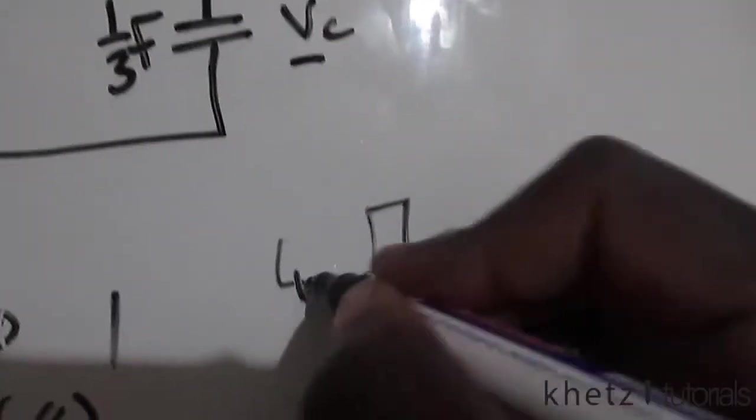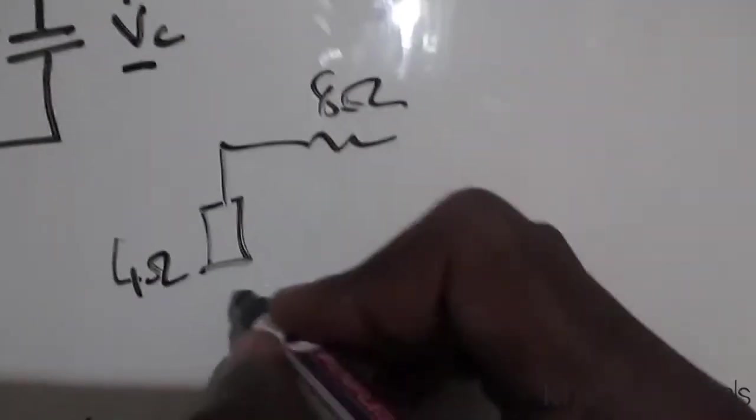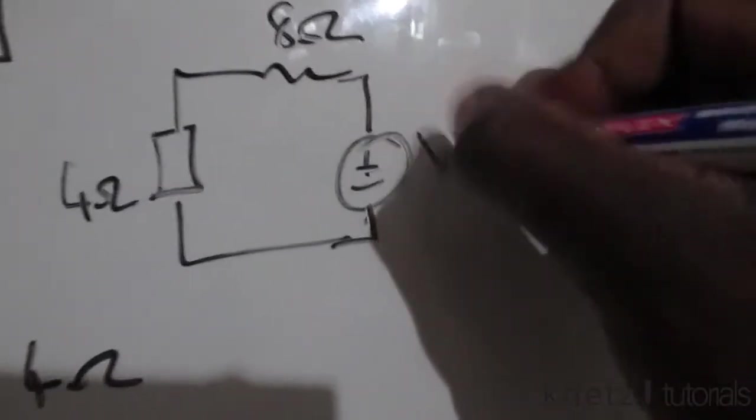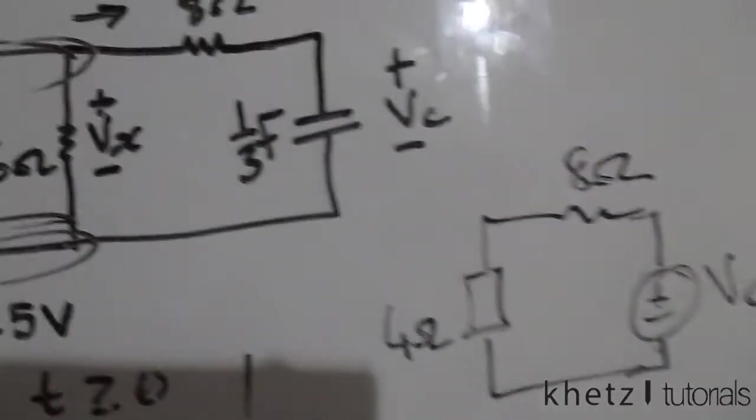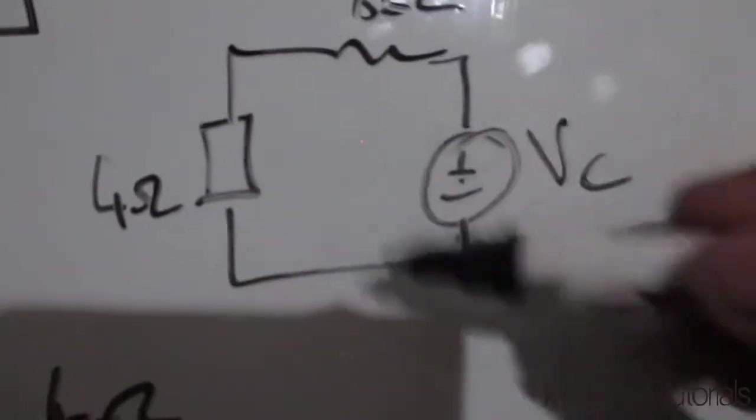We did that over here and it gives us 4 ohms, so we have 4 ohms over here and 8 ohms over here. We can assume this Vc to be a voltage source because this is a storage element, it's a capacitor, it stores energy, so you can assume this to be a voltage source.